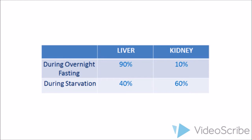When fasting is extended beyond a day - prolonged starvation - the situation changes. The liver drops to about 40% of gluconeogenesis while the kidney increases to about 60% of the work.